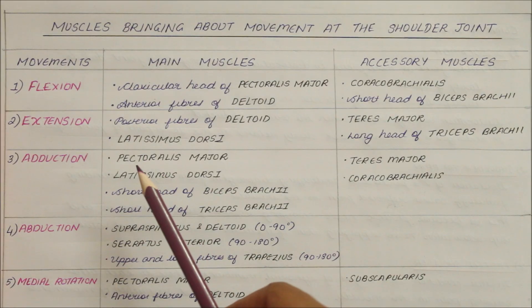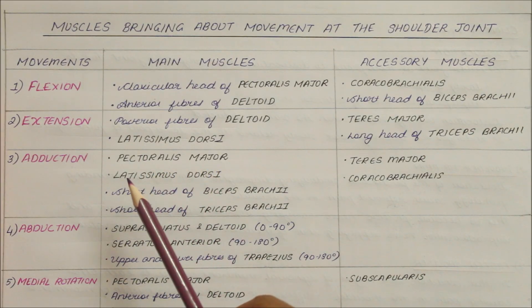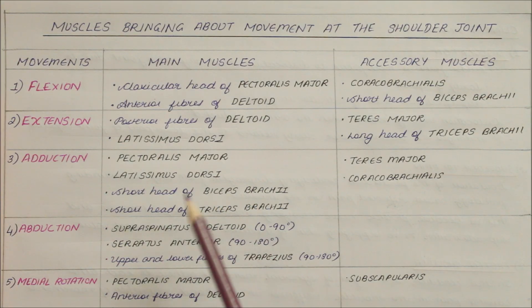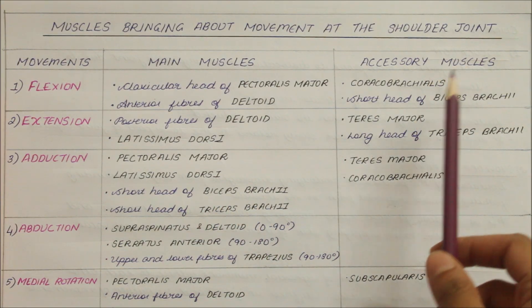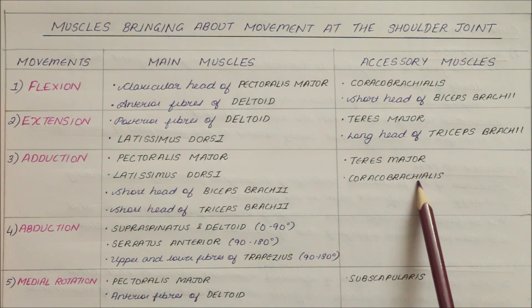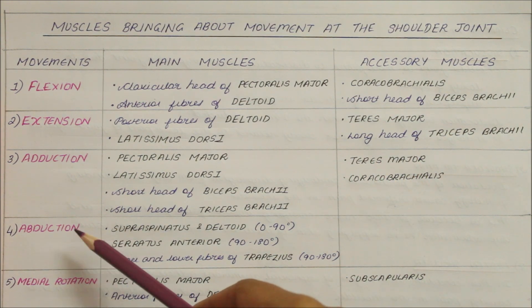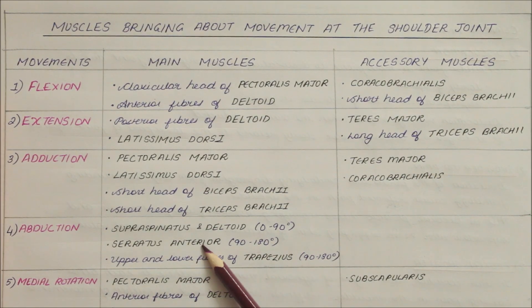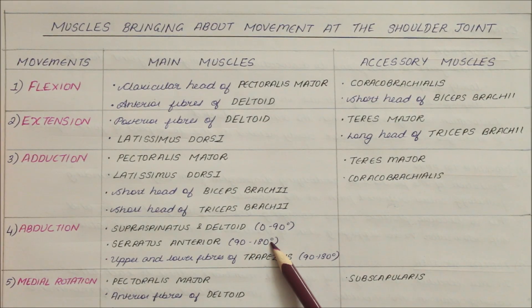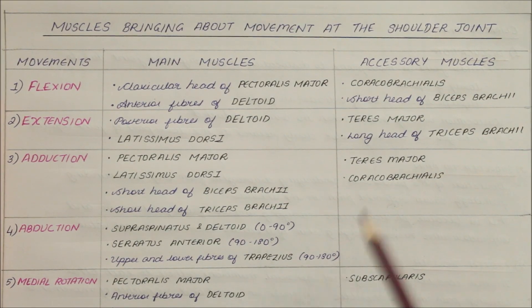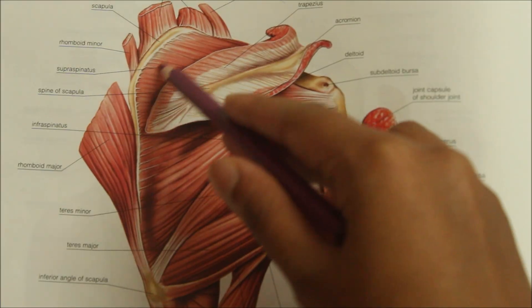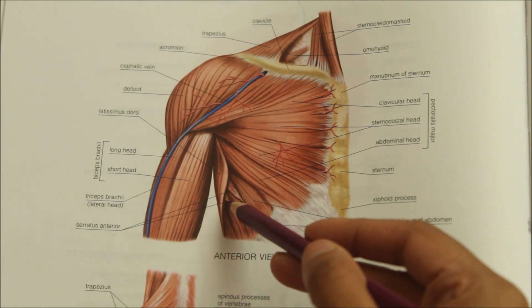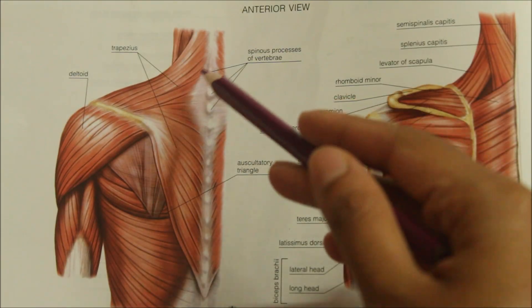The adduction movement involves the main muscles: pectoralis major, latissimus dorsi, short head of the biceps, and short head of the triceps; accessory muscles are the teres major and coracobrachialis. In abduction, the main muscles are the supraspinatus and deltoid from 0° to 90°, then the serratus anterior from 90° to 180°, and the upper and lower fibers of the trapezius from 90° to 180° of abduction. This is the supraspinatus, this is the serratus anterior, and here is the trapezius muscle.